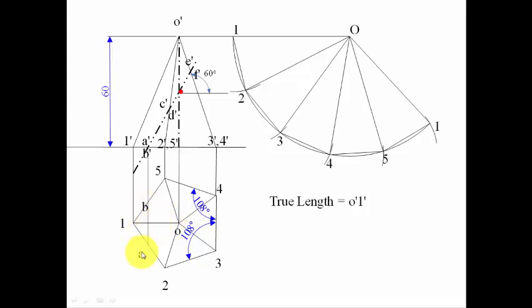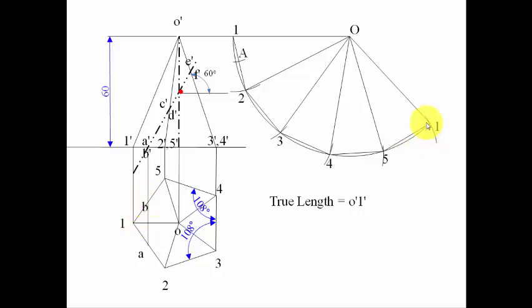Now we need to precisely locate points A and B. Point A lies between 1 and 2 — place one leg of your compass at the measured position and with 1 as center put an arc; that gives the precise location of point A in the development. Similarly for point B: measure the distance, place one leg of the compass accordingly, and with 1 as center put an arc — point B lies between 1 and 5.